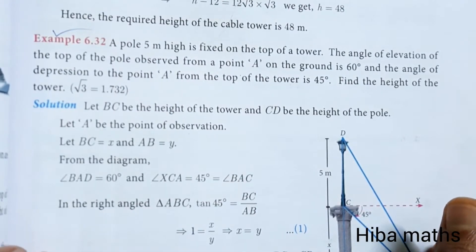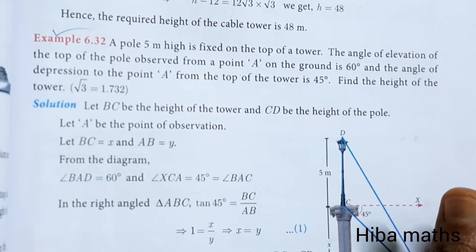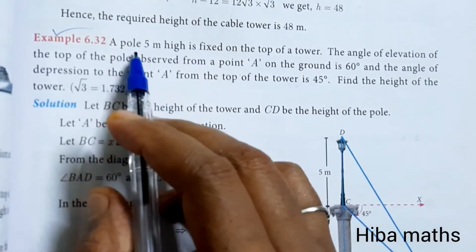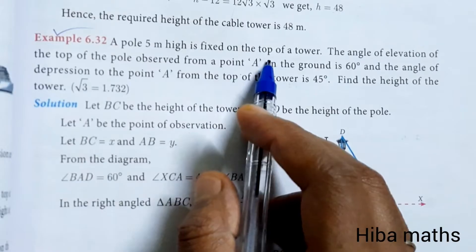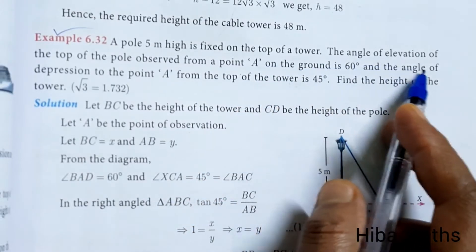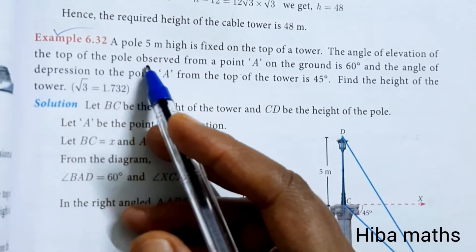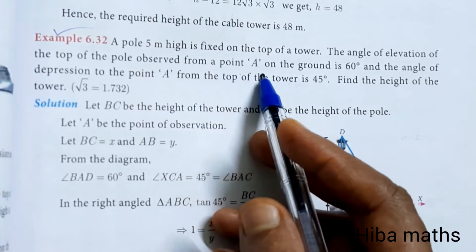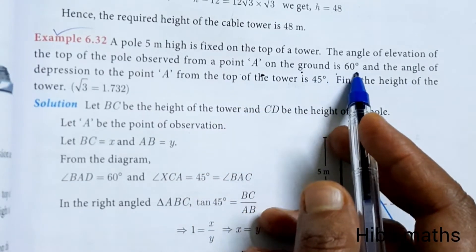Hello students, welcome to Hebermax 10th Standard Max Chapter 6 Example 6.32. A pole 5 meters high is fixed on the top of a tower. The angle of elevation of the top of the pole observed from a point A on the ground is 60 degrees.